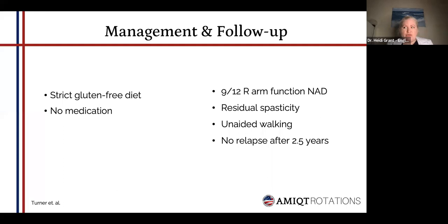This patient was managed with a strict gluten-free diet and was not given any medication. Typically with ALS, Riluzole is normally the medication given, but this was not given in this case because even though it was a classic presentation of ALS, the cause was not that. After nine months, he completely regained his right arm function. He was able to write again, he was able to button up his shirts. He still had a bit of residual spasticity, but he was able to walk unaided.